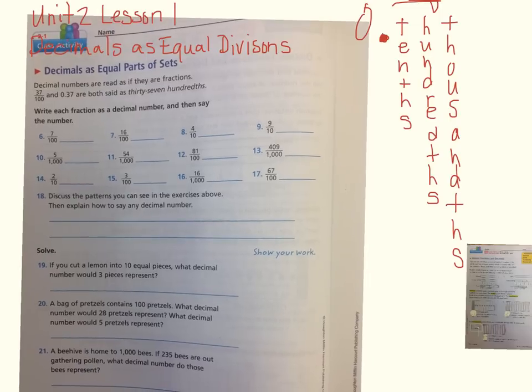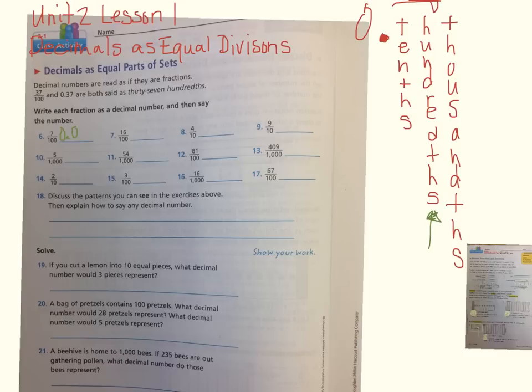Decimal numbers are read as if they were fractions, so that's an important part to know. For example, number six says seven hundredths. Write each fraction as a decimal number and then say the number. If I'm looking at hundredths, I'm looking at this place value. I'm going to put a zero to say there's going to be a decimal, and I'm going to put another zero to hold the tenths place because I have seven hundredths.